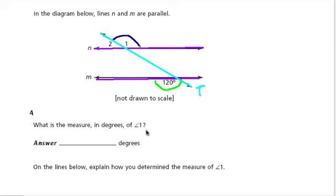And one thing you might remember is that alternate exterior angles are equal. So here, this angle 120 and 1 are on opposite sides of a transversal. And they're both exterior angles. So you could say that they're equal.